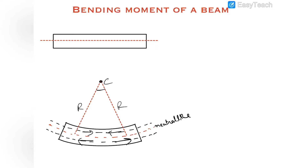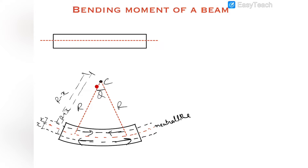The radius of the neutral line is r and the angle it has bent is theta. Let us assume the distance from the neutral line to the line of interest is x — both above and below. The black line above the neutral line has radius r plus x, the black line below has a corresponding radius, and the neutral line itself has radius r.